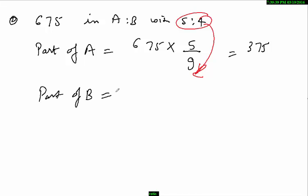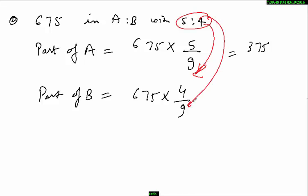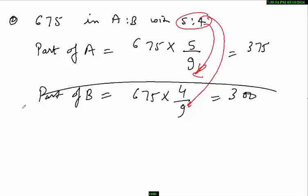In the same way, part of B would be 675 into 4 upon 9. Solving this gives 300. So the answer is A = 375 and B = 300.